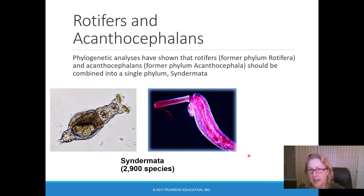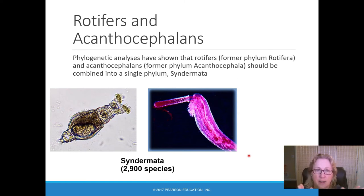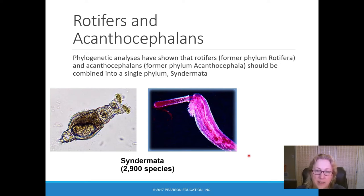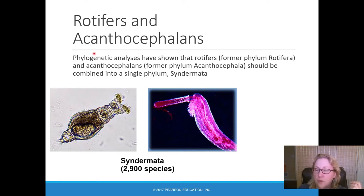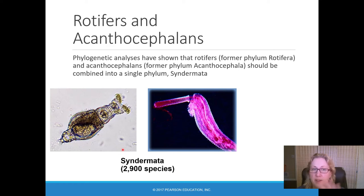Rotifers and acanthocephalans were combined into a single phylum based on DNA evidence, which showed they're actually closely related even though they don't look anything alike and have different lifestyles. The biggest thing they have in common is that they're very tiny. The name 'rotifer' comes from the word for wheel, because they have wheel-like cilia-containing structures they use to bring food into their mouths.